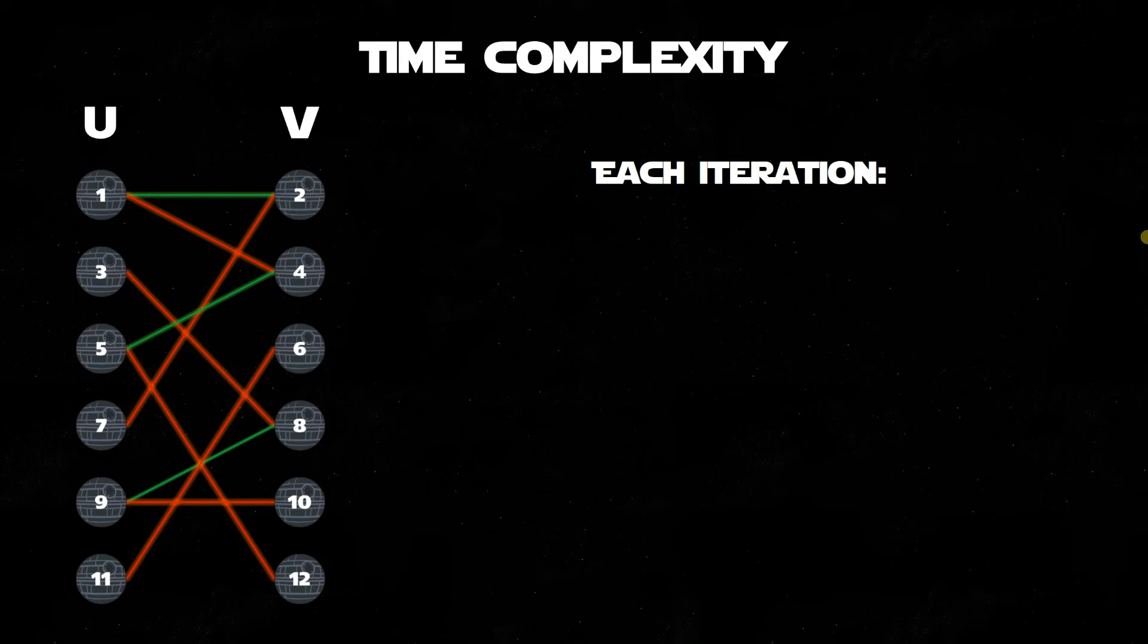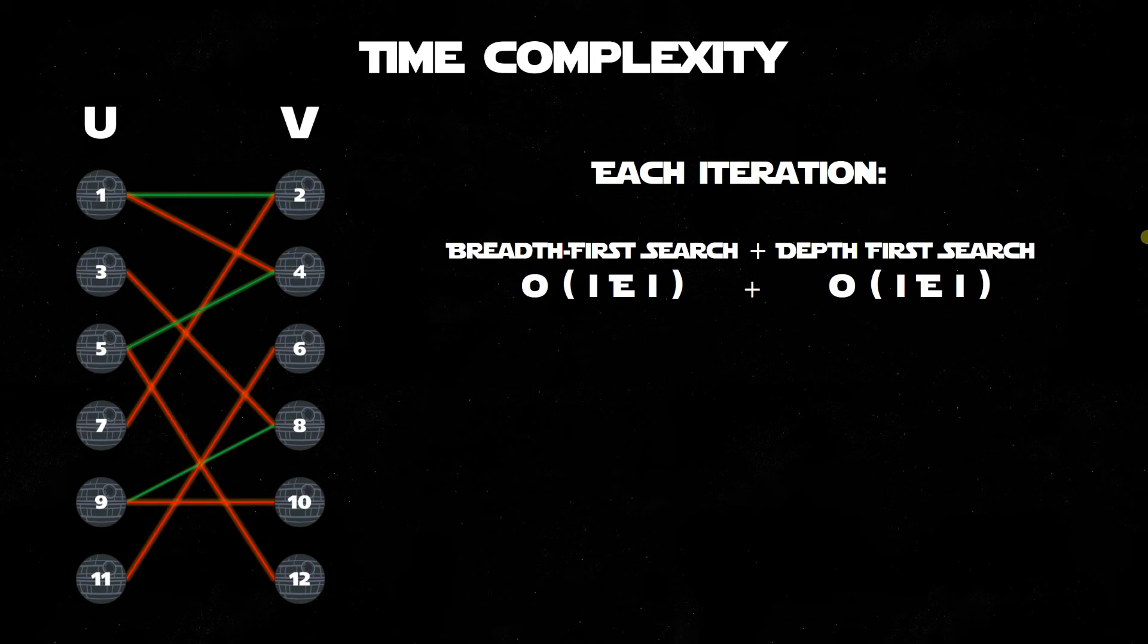And now let's have a look at the time complexity of the Hopcroft algorithm. First of all, we're going to look at how much time each iteration takes. Because each iteration is effectively a breadth-first search followed by a depth-first search, and each of these have orders relating to the number of edges in the graph, each iteration in total has order e, e standing for the number of edges.